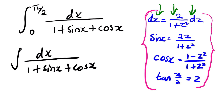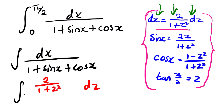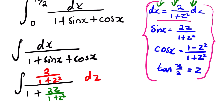We can see that dx is equal to this identity. Now, where we see dx, we are going to substitute by 2 divided by 1 plus z squared. Then, dx divided by 1 plus sin x gives us 2z over 1 plus z squared. And then we have plus our cos x, which is 1 minus z squared over 1 plus z squared.